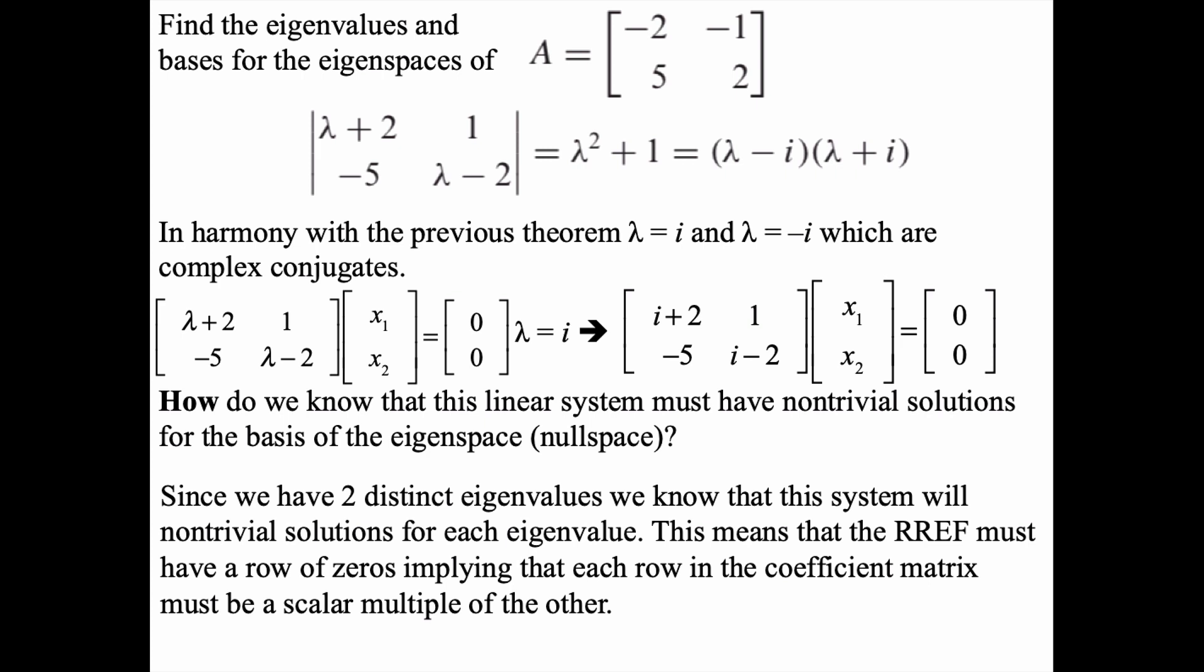We know that this system will have non-trivial solutions for each eigenvalue. What that really means when we take the reduced row echelon form of this system is that we must have a row of zeros in the coefficient matrix. That's the only way to get non-trivial solutions. We're looking for eigenvectors, so we know that each row in the coefficient matrix must be a scalar multiple of the other, and we can exploit that fact.